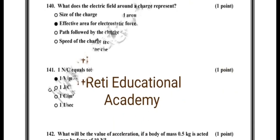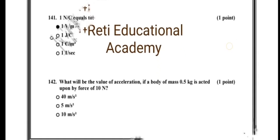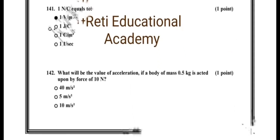The correct answer is 1 V/m. Question number 142: What will be the value of acceleration if a body of mass 0.5 kg is acted upon by force of 10 Newton? The correct option is 20 meters per second squared.